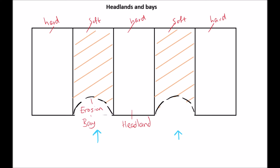If a bay is sheltered by two headlands, there is little wind, which means the water is slow and has less energy. Material will be deposited here, leading to a beach forming within the bay.